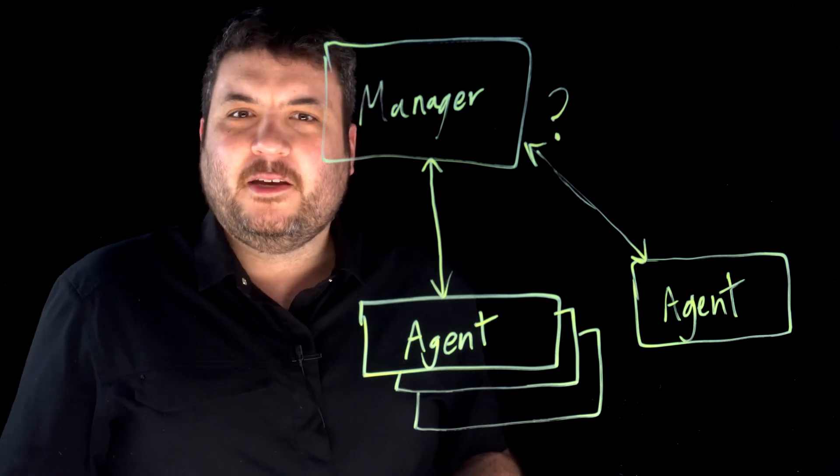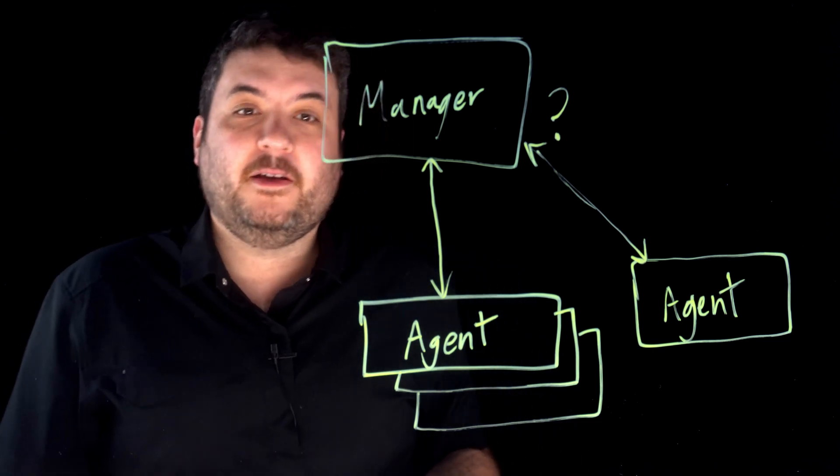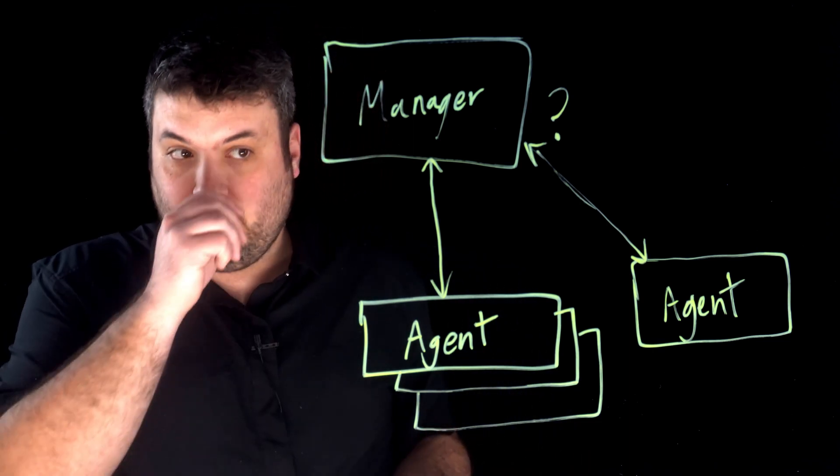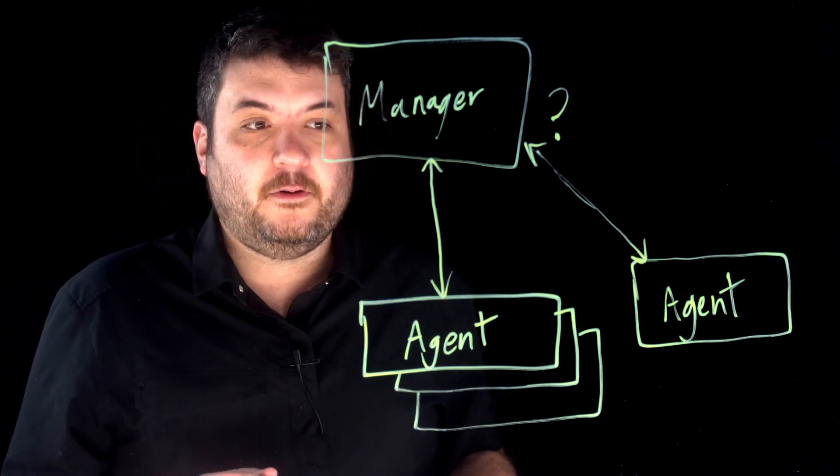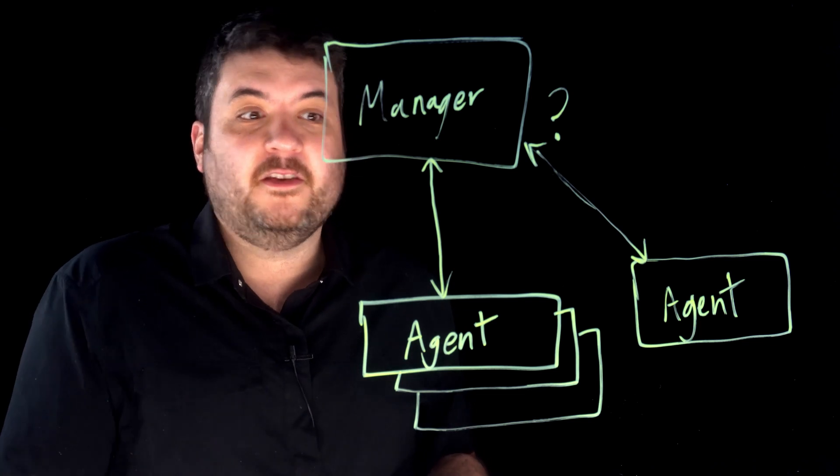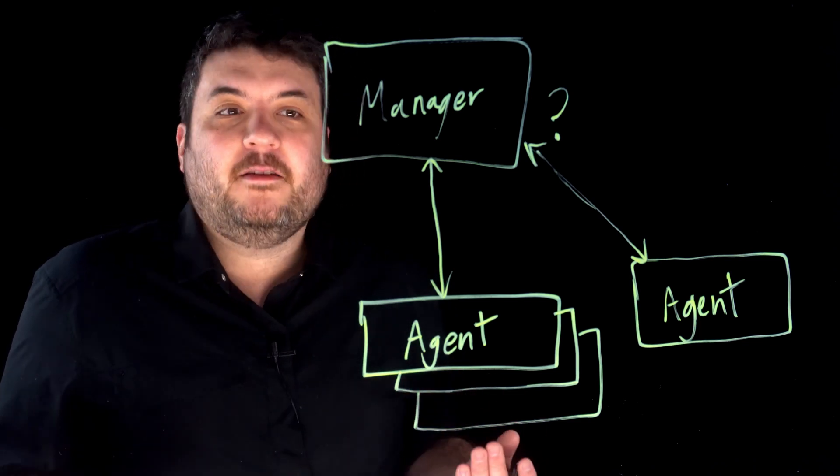But the manager doesn't know what all those things are. It needs a list of all the things that are going to be reported, and then a list of things that I can request from the agent to say, give me your current status, or set this value to something, or turn this on, turn this off. How do I talk to this thing?